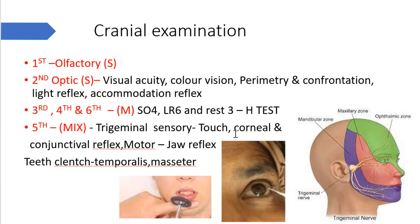Coming to cranial examination, you should know the names of all the cranial nerves. First is the olfactory nerve — to examine it, you close one nostril and present a vial or test tube to the other nostril, asking the subject whether they can sense it. This tests the olfactory nerve, which is a sensory nerve.